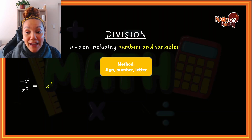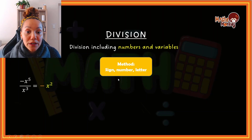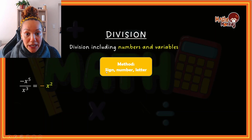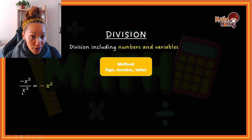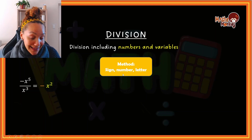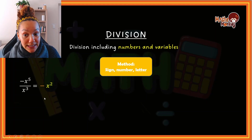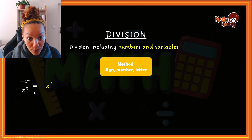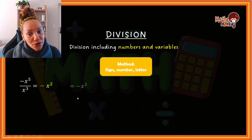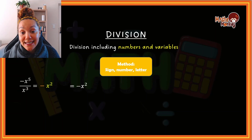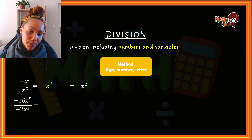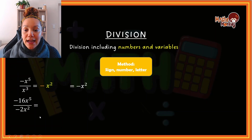When dividing I subtract the powers, so x to the power of five minus three gives me x to the power of two. The sign is negative, there are no numbers in front of the variables to divide, and then I divided the letters by subtracting the powers. So the answer is negative x squared.